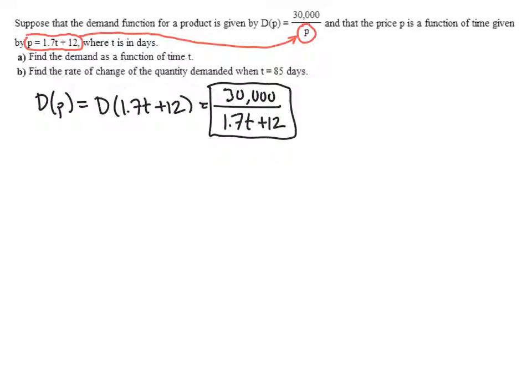And now we're asked for the rate of change of quantity when t is 85 days. So here's where things get a little bit tricky. What they want is the derivative of capital D with respect to time, not the derivative of capital D with respect to p. So what we can't do is take the derivative of 30,000 over p. What we have to do is take the derivative of this composed function.